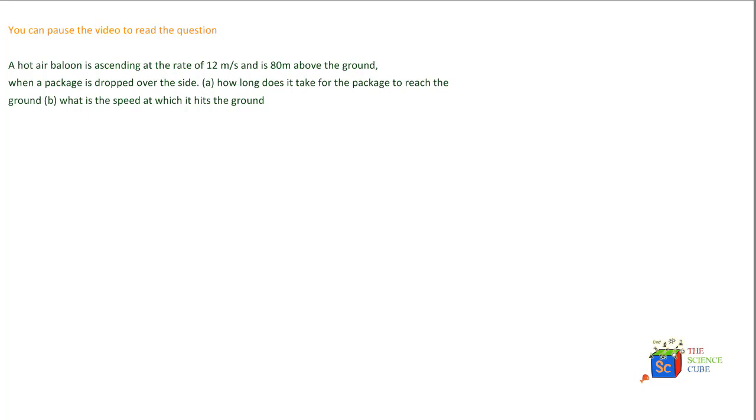So there's a hot air balloon which is moving up with a certain velocity. It's moving up with a velocity of 12 meters per second and it is 80 meters above the ground level. This is the ground level at 0 meter mark and this is at 80 meter mark. A packet is dropped from the side of it which drops to the ground. So what they're asking is how long does it take for the package to reach the ground.